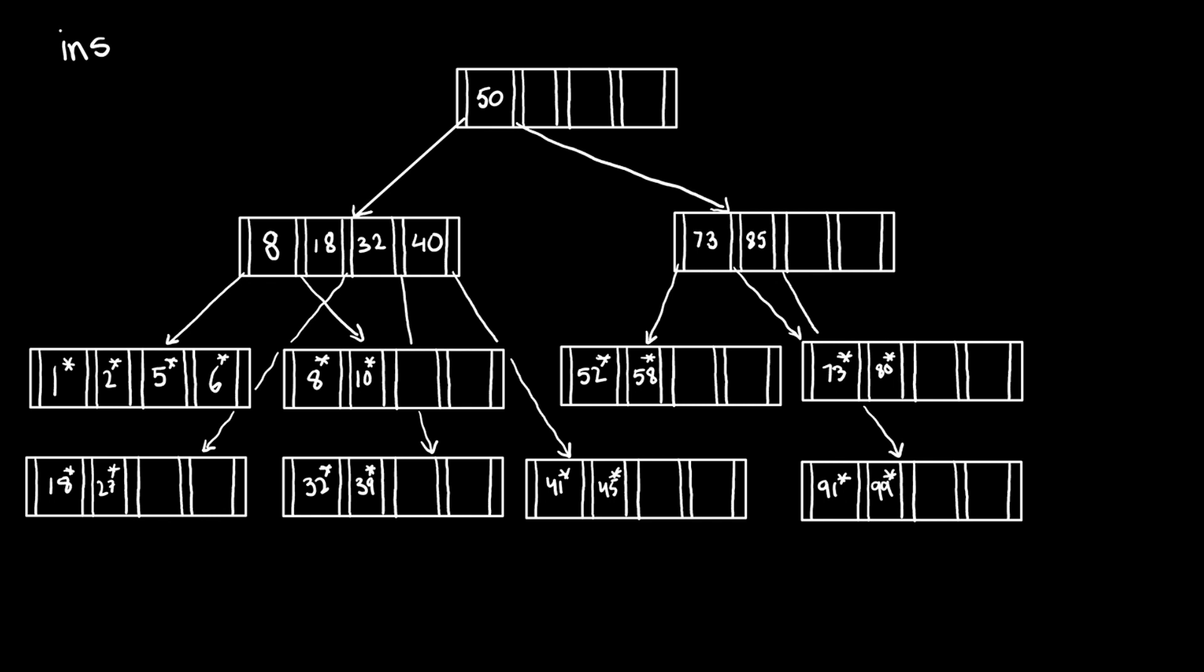Let's look at another example. Let's insert 3. Now, we look at the root, which contains 50, and traverse down the first pointer. Now, we see the first entry is 8, so we take the first pointer down again.